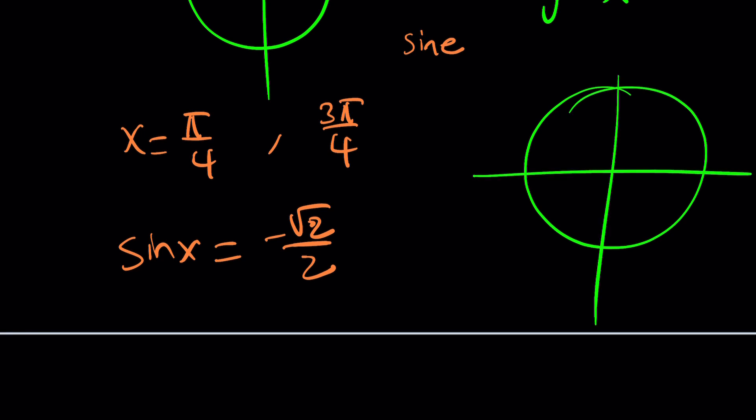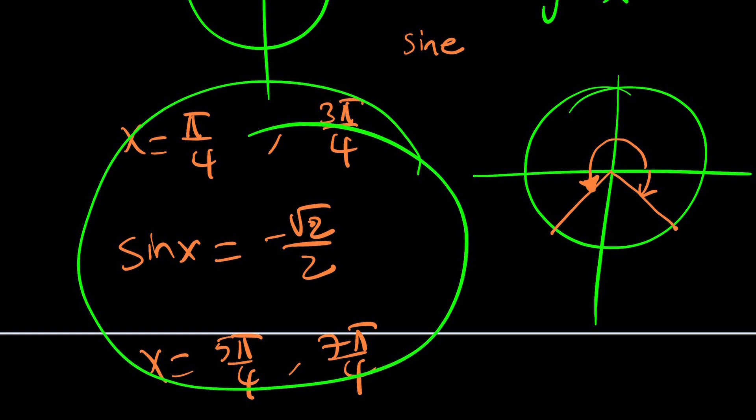For example, if you think about where sine is negative, here and here, right? What are they, though? Well, this is pi over 4, but that's pi plus pi over 4, so that'll be 5 pi over 4. And guess what? This is equal to negative pi over 4, or 2 pi minus pi over 4, which is 7 pi over 4. Therefore, we have four solutions to this equation.